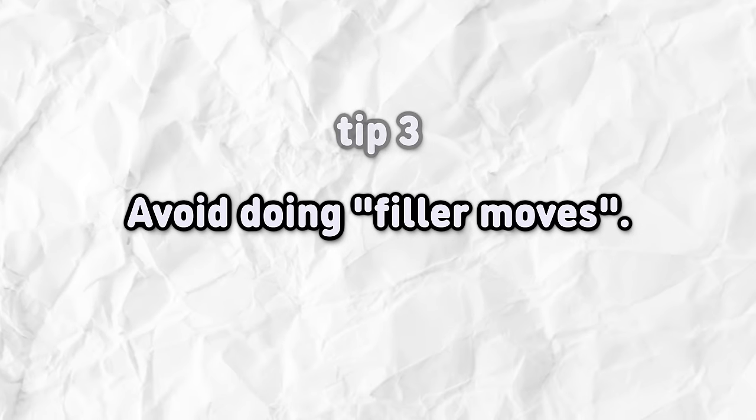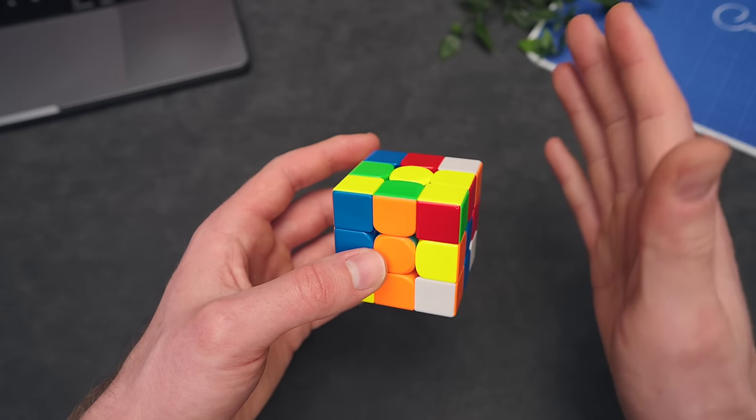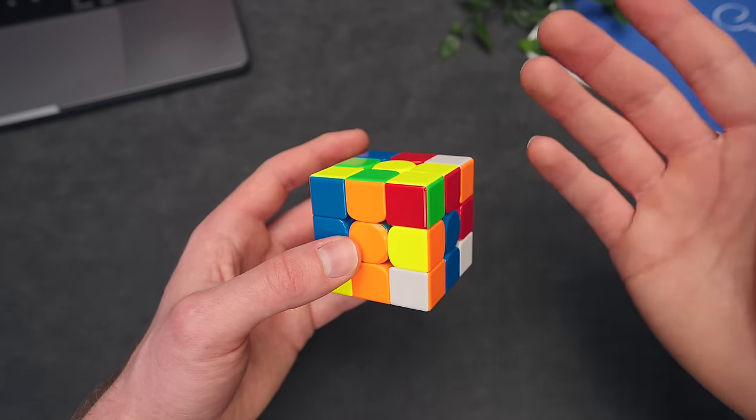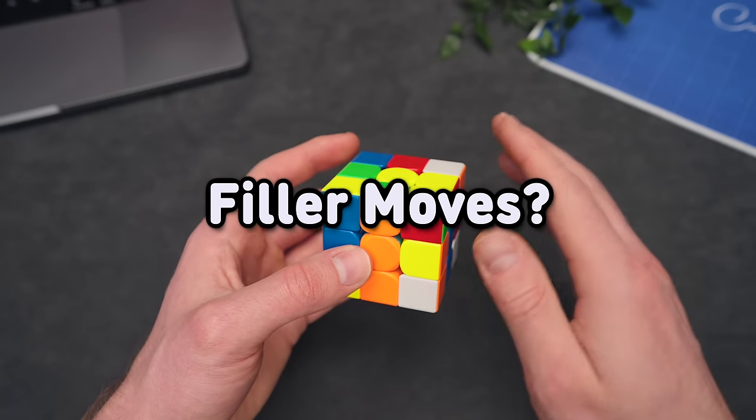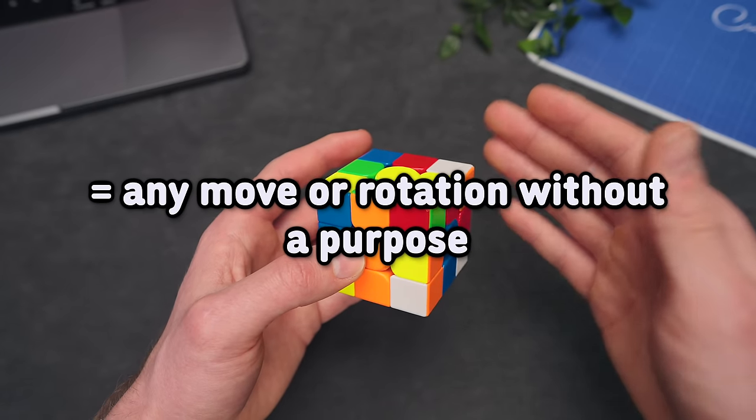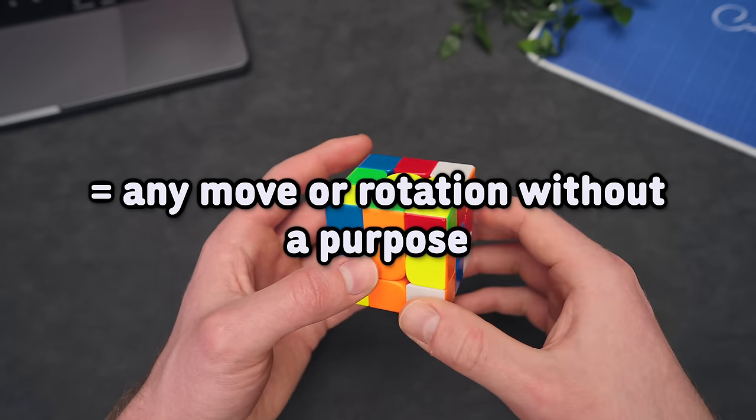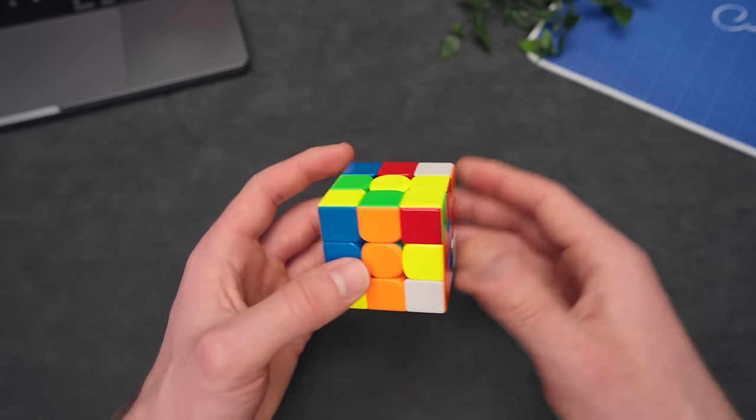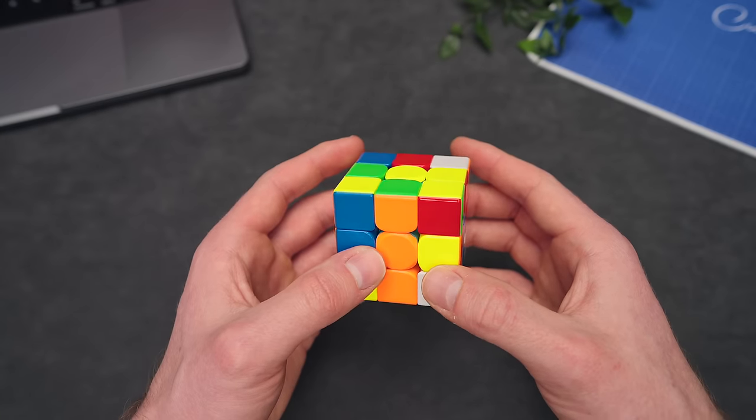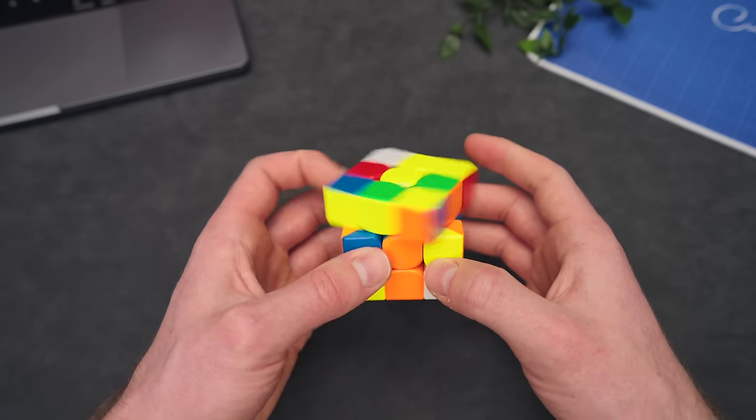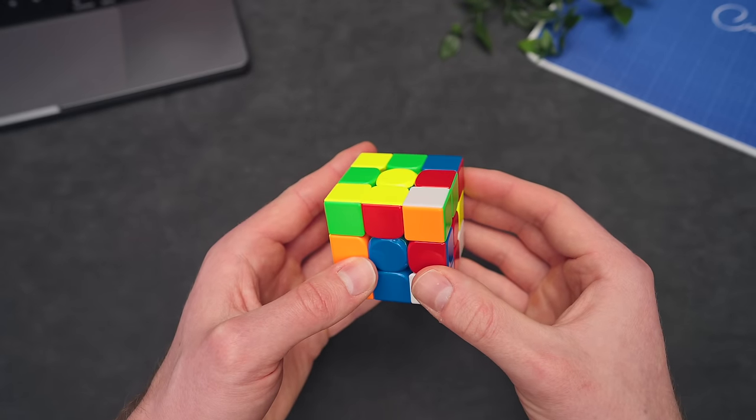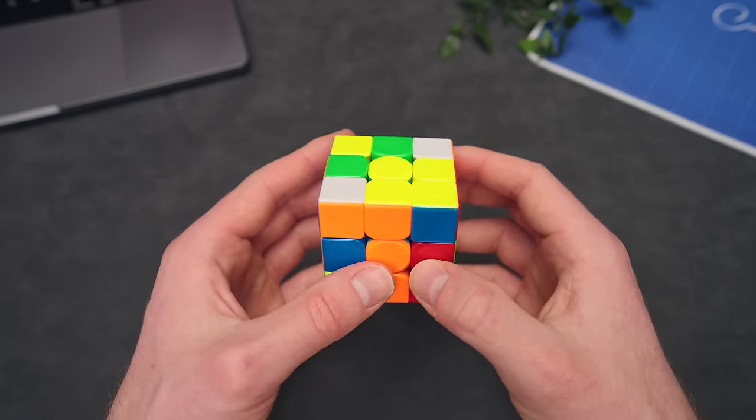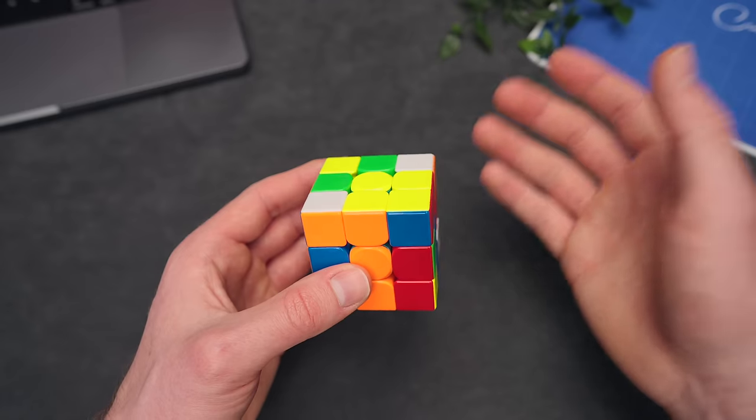Avoid doing filler moves. And I wish I knew this tip way earlier because I still do them, but it's really good to stop doing them early on. Now, what are filler moves? Essentially, any move you do that doesn't really have any benefit except for looking around and tracking pieces, those are filler moves. For example, if I'm at this position and I cannot really find the pair right away, doing a U right now or doing a U prime is a filler move. Doing this is a filler move. And even just doing a sexy move to just move pieces around to hopefully see more pieces is a filler move.